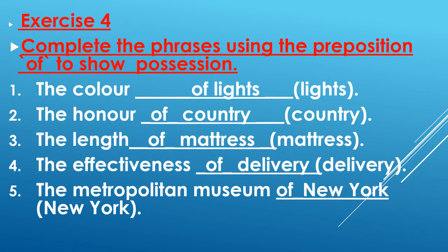Now your last exercise is exercise number four: complete the phrases using the preposition of to show possession. You have to use the preposition of. The first phrase is: the color dash of lights — write of in the blank: the color of lights. Second one is: the owner dash country — the phrase will be: the owner of country.